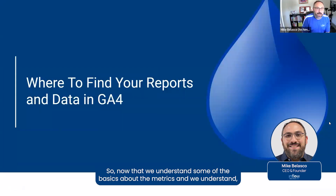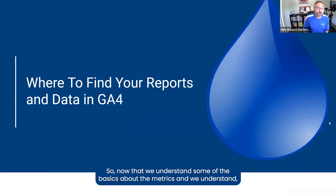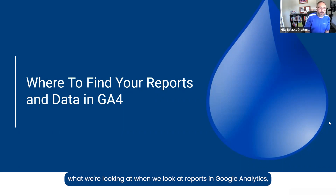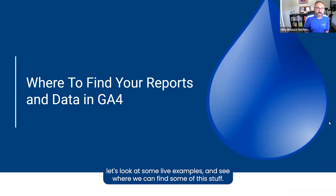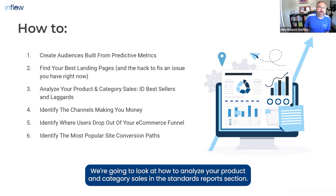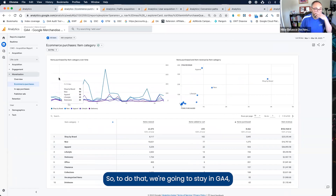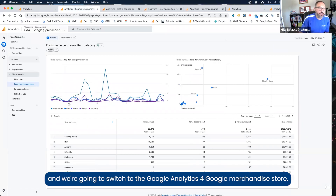Now that we understand some of the basics about the metrics and we understand how to orient ourselves and have a little bit better idea of what we're looking at when we look at reports in Google Analytics, let's look at some live examples and see where we can find some of this stuff. We're going to look at how to analyze your product and category sales in the standard report section. To do that, we're going to stay in GA4 and switch to the Google Analytics 4 Google Merchandise Store.